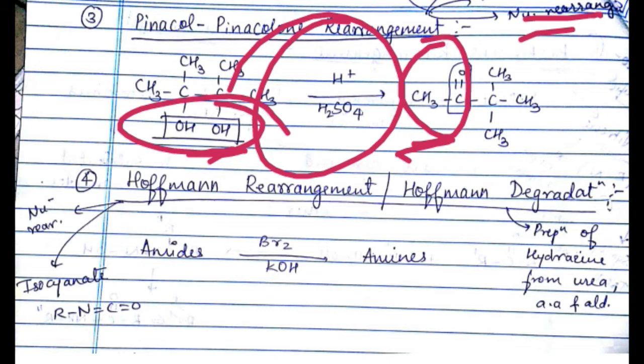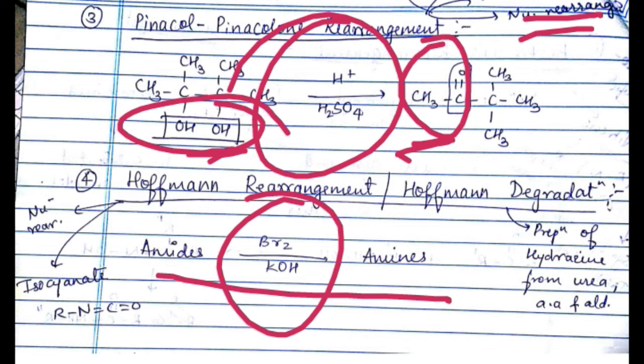The fourth reaction is Hoffmann rearrangement or Hoffmann degradation, amides to amines in presence of Br2 and KOH, bromine and KOH.